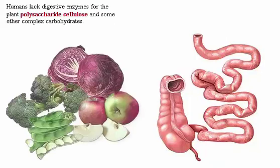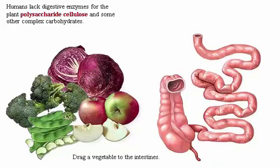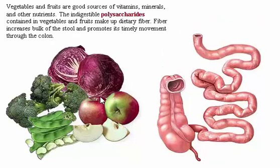Humans lack digestive enzymes for the plant polysaccharide cellulose and some other complex carbohydrates. Vegetables and fruits are good sources of vitamins, minerals, and other nutrients. The indigestible polysaccharides contained in vegetables and fruits make up dietary fiber. Fiber increases bulk of the stool and promotes its timely movement through the colon.